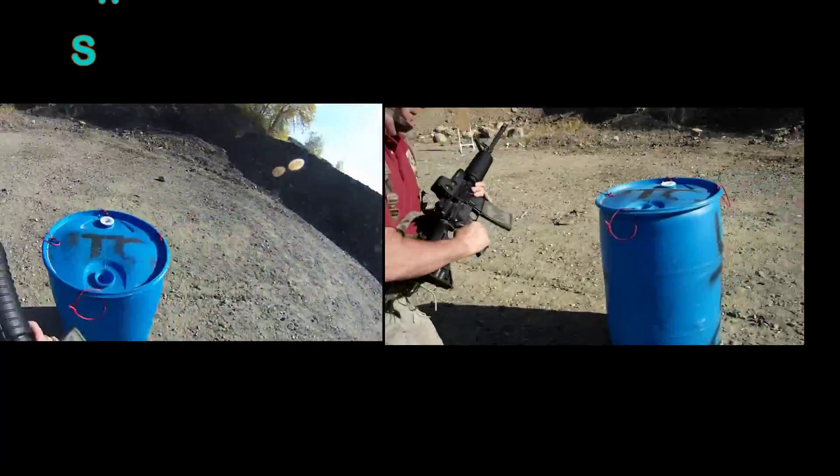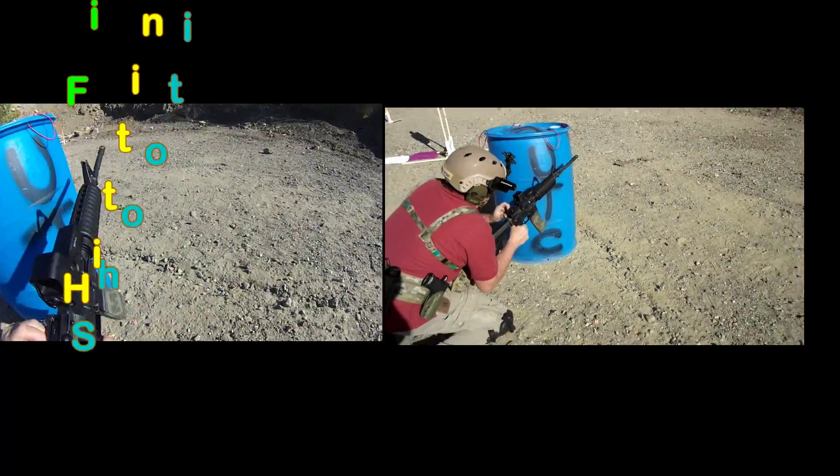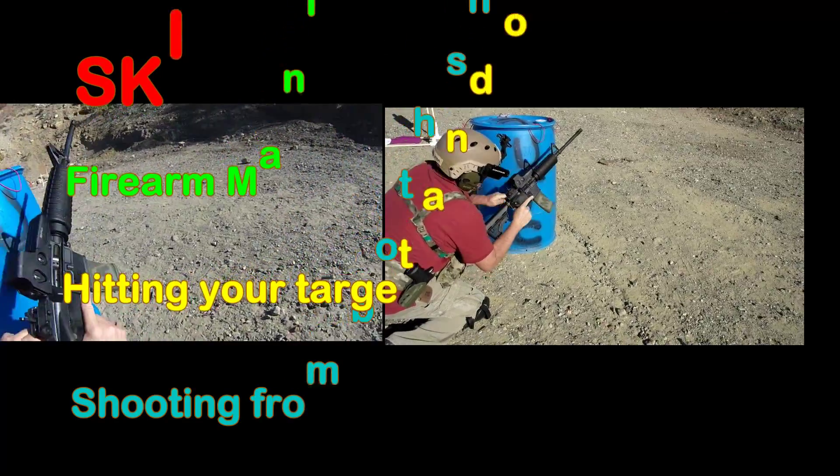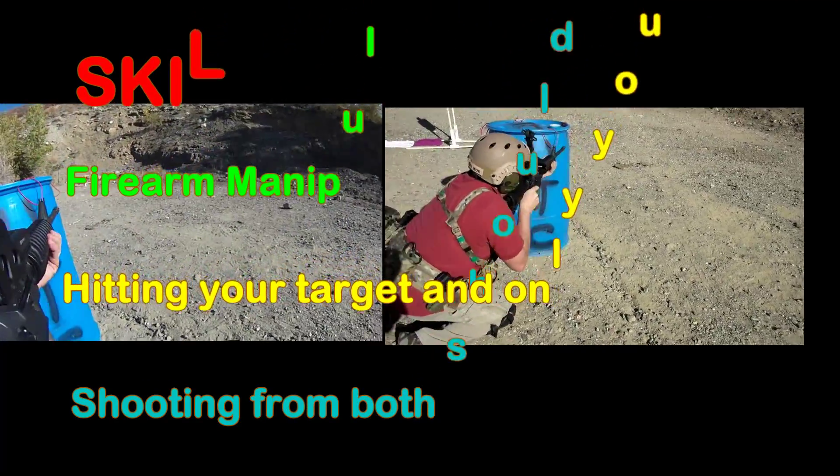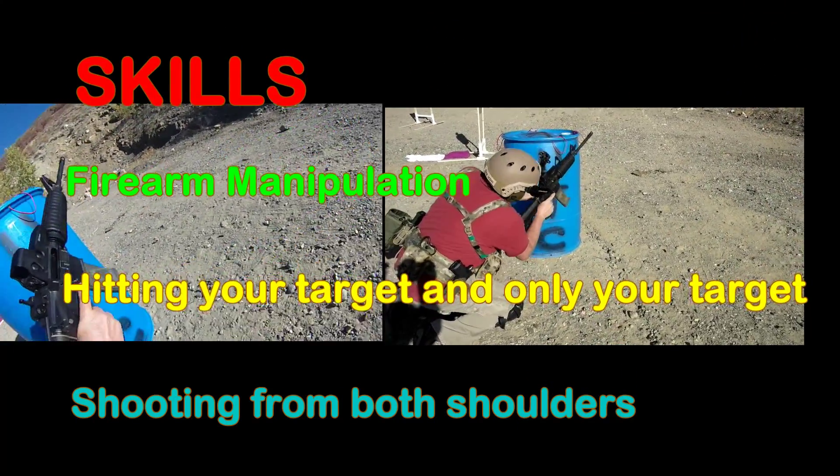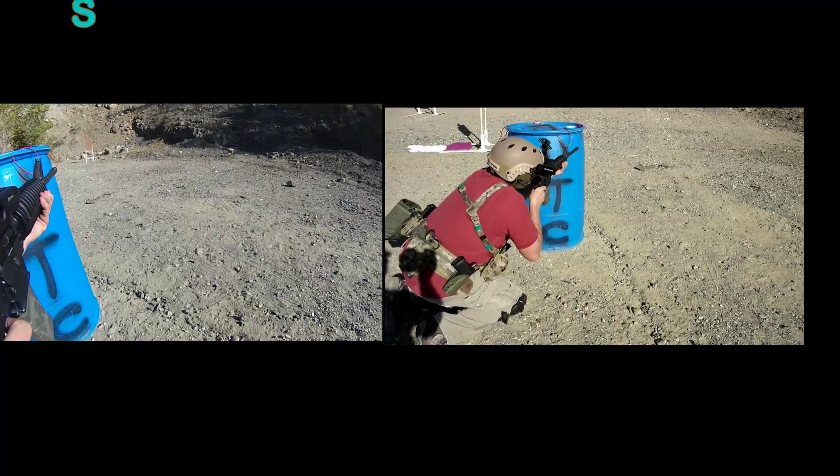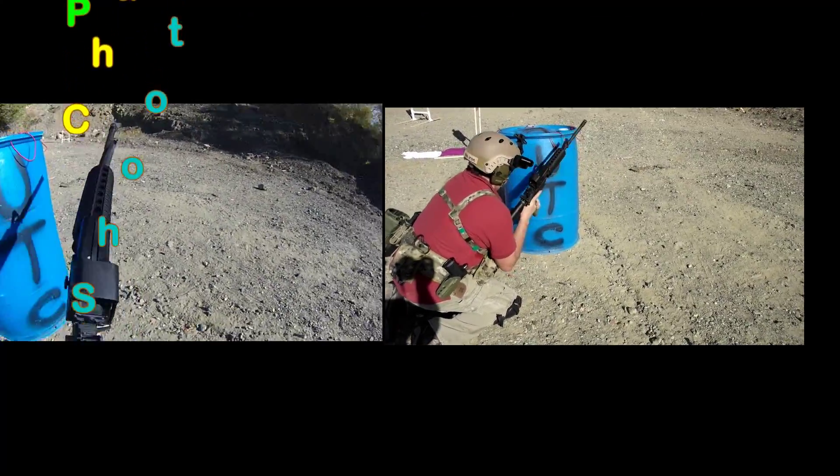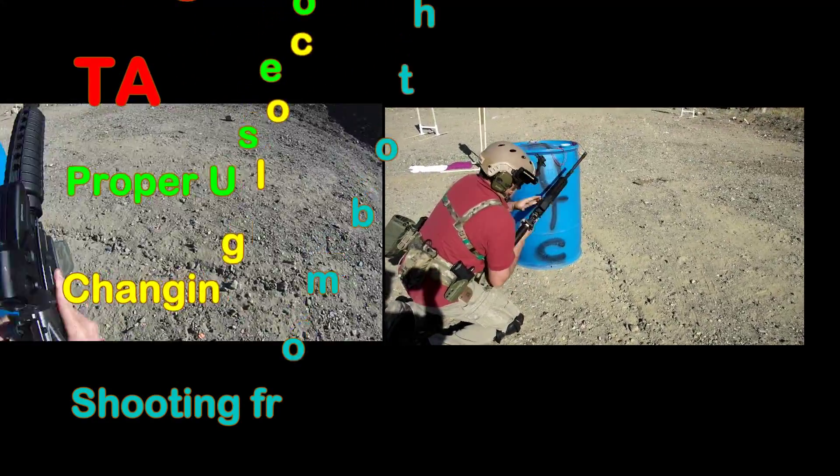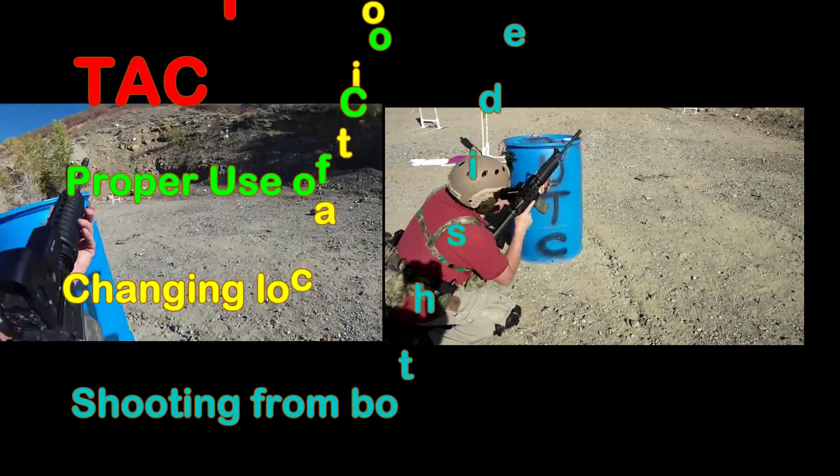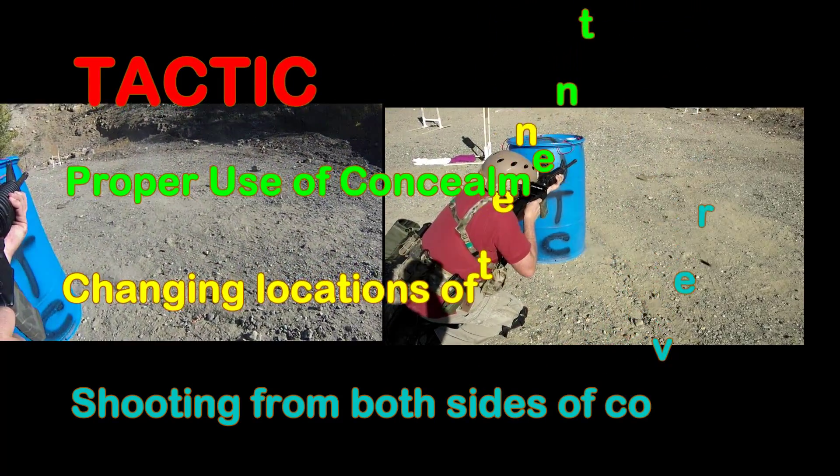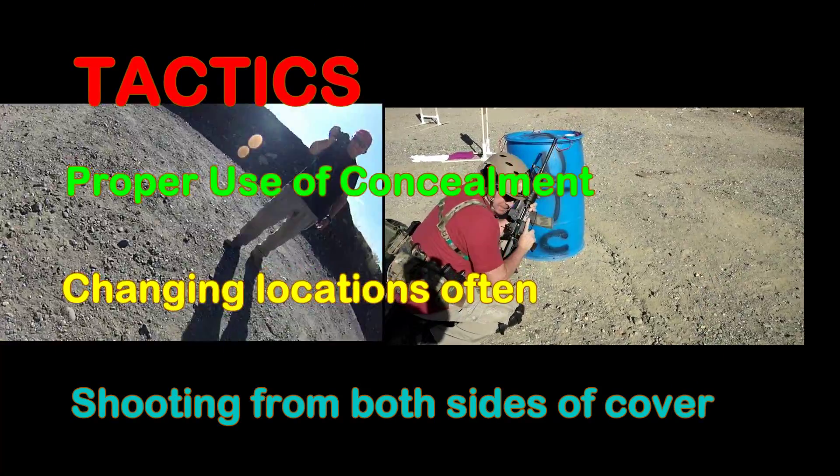Here's the skills they're going to be practicing: demonstrating the skills to manipulate firearms to get them in firing condition as soon as possible, the skill to hit only what you're aiming at from behind cover, and shooting from both shoulders. The tactics: proper utilization of cover and concealment, changing cover locations as often as possible, and utilizing both sides of cover.